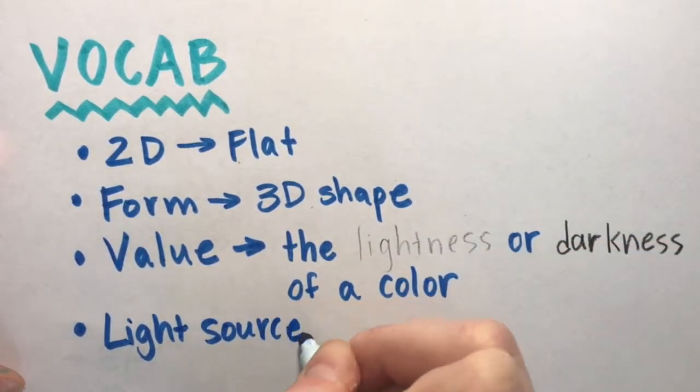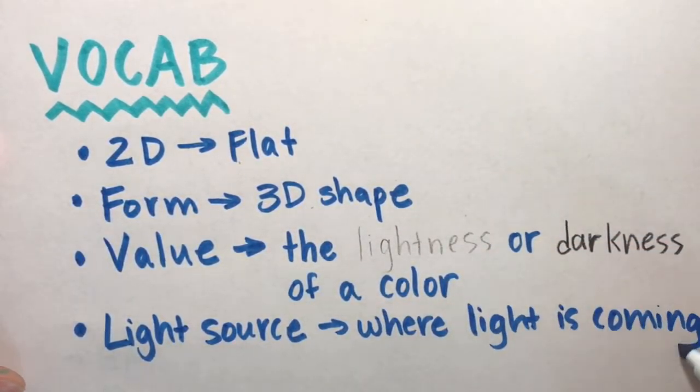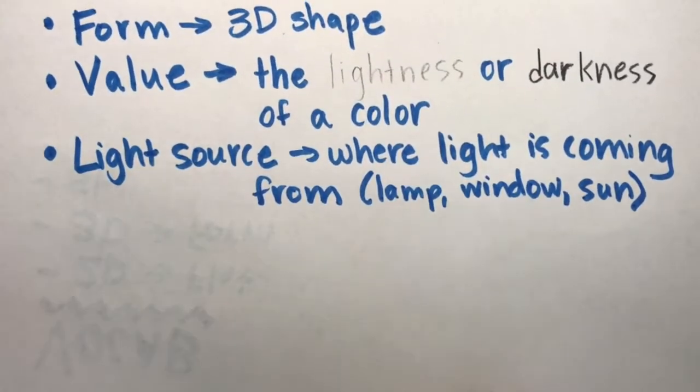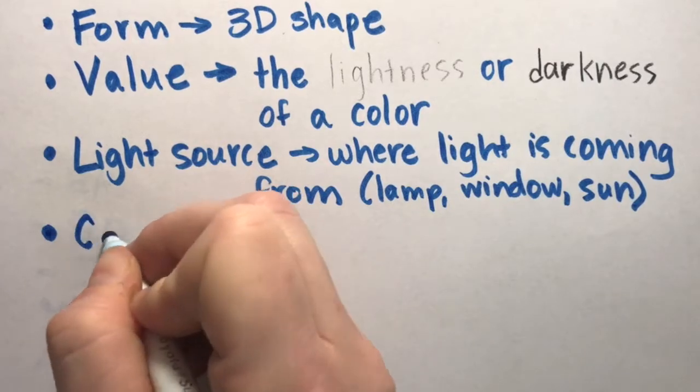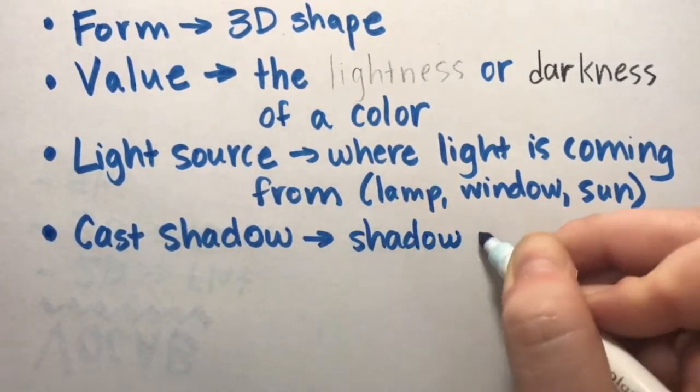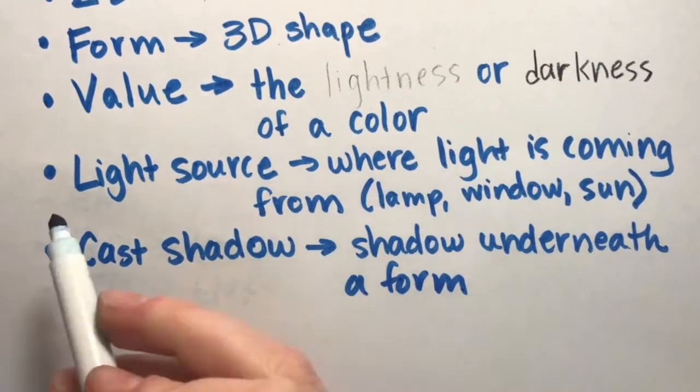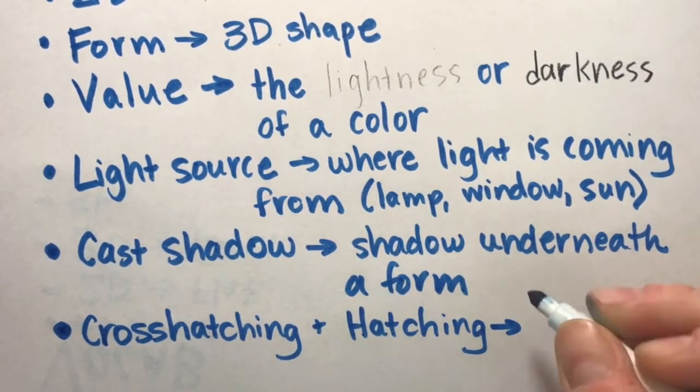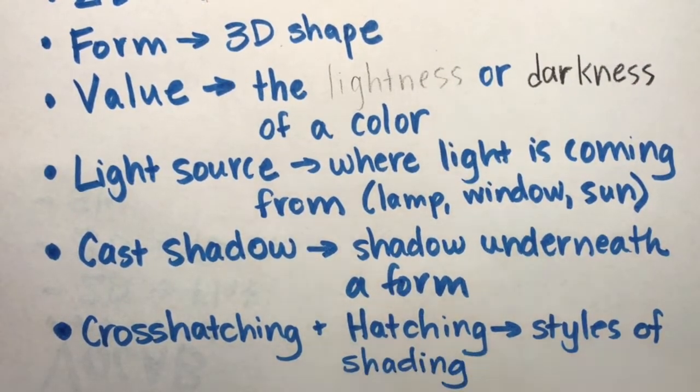Next is light source. Light source is wherever the light is coming from. This might be from a lamp, a window, or even the sun. Cast shadow is the shadow underneath a form. And last on our list is hatching and cross hatching, which are styles of shading.